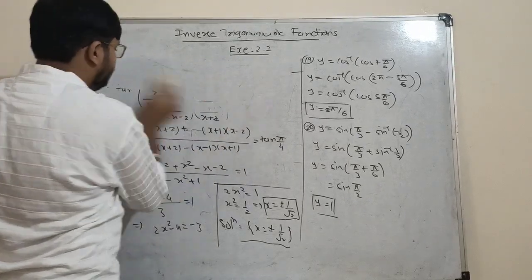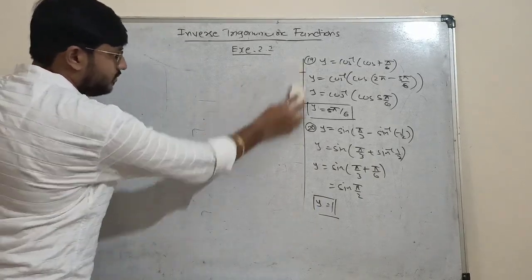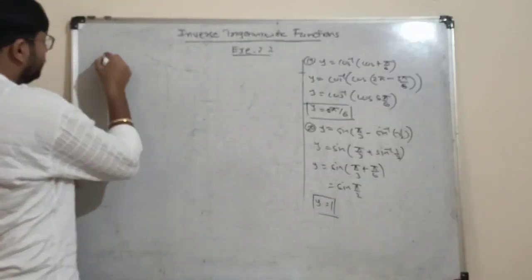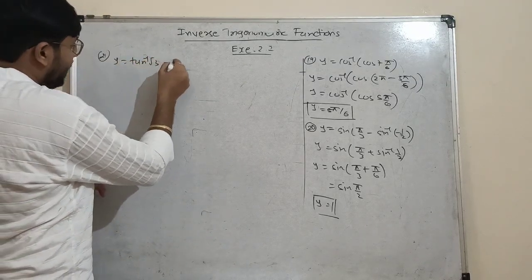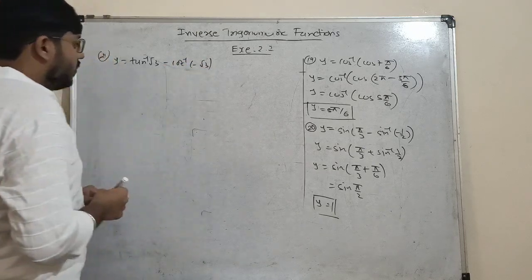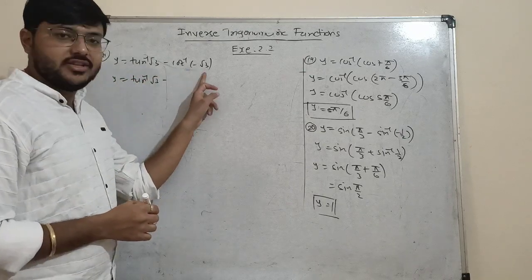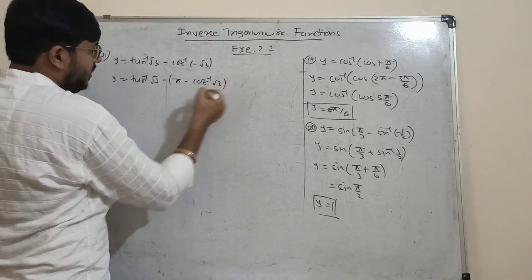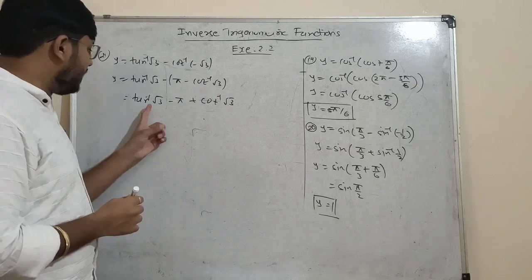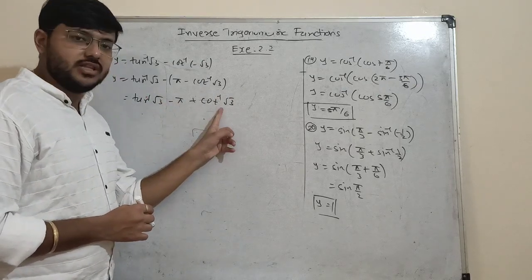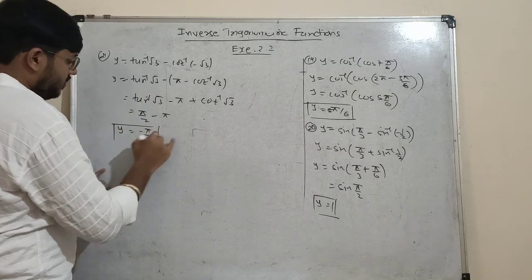The final question of the exercise: y = tan⁻¹(√3) - cot⁻¹(-√3). We know cot⁻¹(-√3) = π - cot⁻¹(√3). So y = tan⁻¹(√3) - π + cot⁻¹(√3). Since tan⁻¹(√3) + cot⁻¹(√3) = π/2, we get y = π/2 - π = -π/2.